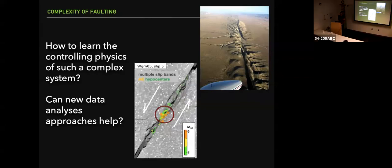Fundamentally, what we're trying to do is learn about the controlling physics of the fault system. That's what we really care about — how does a fault work? Using classical processing approaches, I was getting really frustrated a decade ago because I just felt like we were making no progress at all. Using precursors to failure to understand how a fault works, especially near failure, is interesting, but there were just no advances. That's what led us down this path — the new data analysis toolbox we'll be employing for the rest of this presentation.